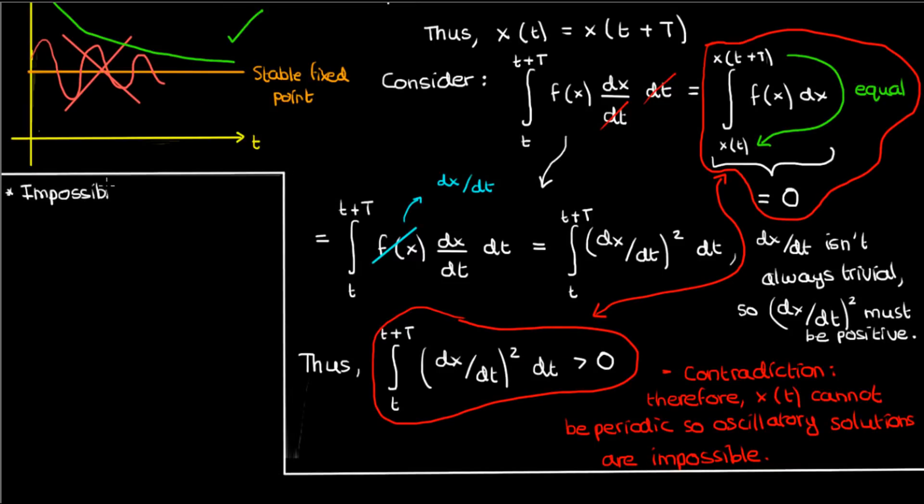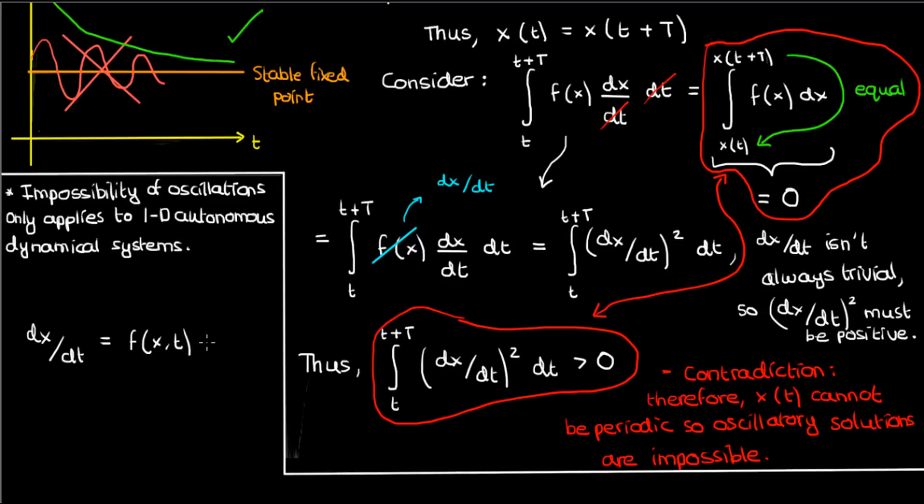Keep in mind that the impossibility of oscillations only applies to one-dimensional autonomous dynamical systems. If I had something like dx/dt equals f(x,t), so my function of dx/dt was also dependent on time, then oscillations would not be impossible here because I've effectively introduced another variable that the function f depends on. I've introduced t, and as a result of introducing t, I've made the system two-dimensional effectively. And because the system is now two-dimensional, oscillations are no longer impossible. My impossibility theorem only applies to systems of the form dx/dt equals f(x).